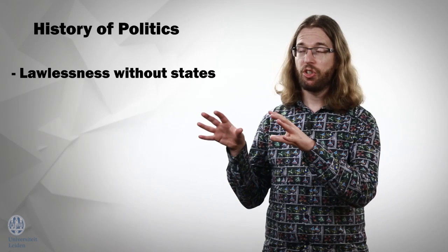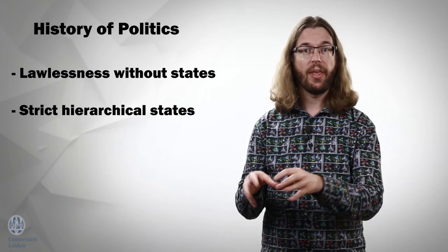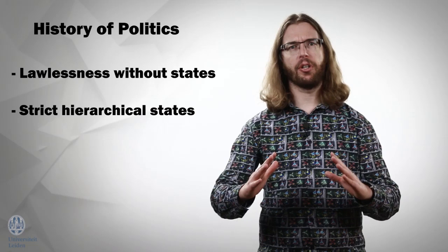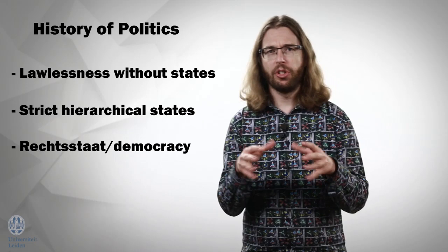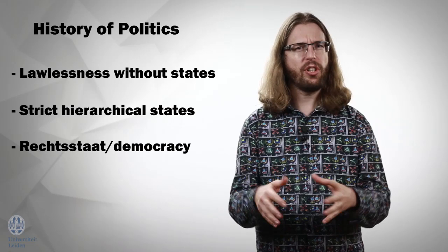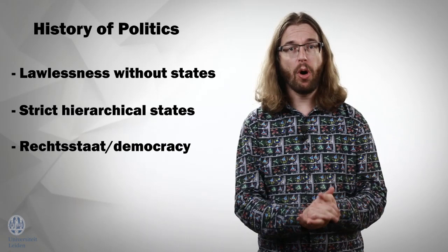Second, there was a very long stage of autocratic rule. States with one or a few persons at the top and a strict hierarchy that structures the rest of society. And third, Hegel says, is the stage that he and we find ourselves in. The stage of what in German and Dutch is called the Rechtsstaat. That is a state in which everyone's powers are strictly limited by the law, and in which, if it's a democracy at least, everyone has a say in what those laws are.